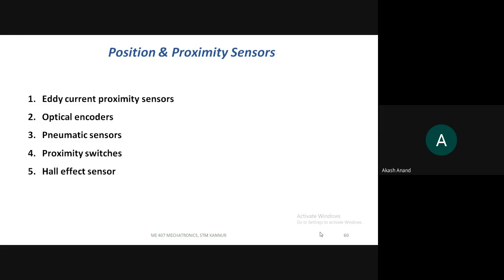Position and proximity sensors are classified into five types: the first is the eddy current proximity sensor, the second is optical encoders, the third is pneumatic sensors, the fourth is proximity switches, and the final type is hall effect sensors. These are the five types we are going to discuss under position and proximity sensing.